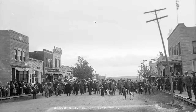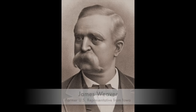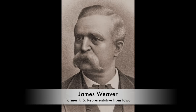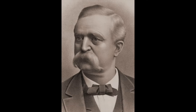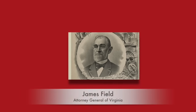The Populists had their first convention in Omaha, Nebraska, which was a Populist hotspot. They nominated James Weaver, the former U.S. Representative from Iowa, who had previously run for president in the Greenback Party back in 1880 but lost. His running mate was James Field, the Attorney General of Virginia.